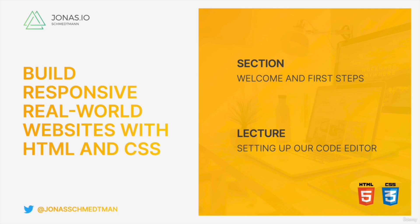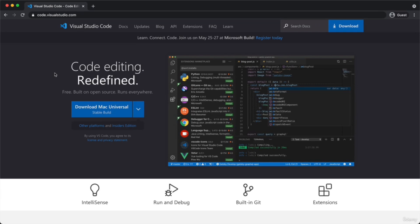Before we can start writing a single line of code, we first need to install a special tool called a code editor. A code editor is essentially special software that allows us to write programming code like HTML and CSS in a very easy way. The code editor we're going to use in this course is called Visual Studio Code from Microsoft. In my opinion and in the opinion of many other developers, this is the very best code editor for web development in the world. Every developer I know right now uses this code editor.